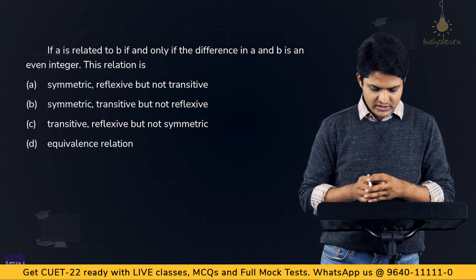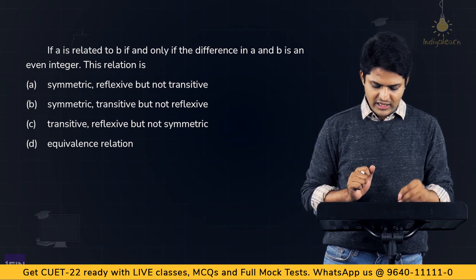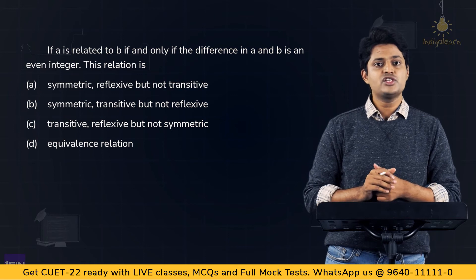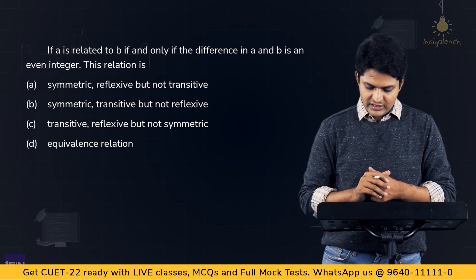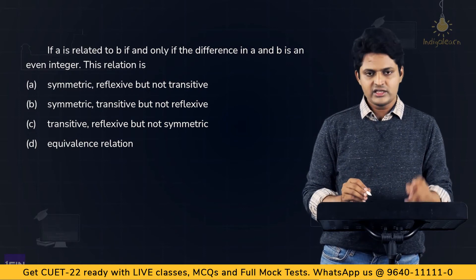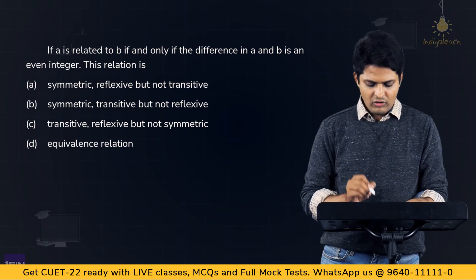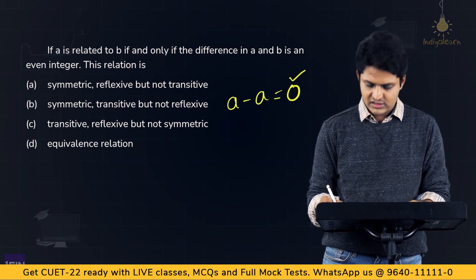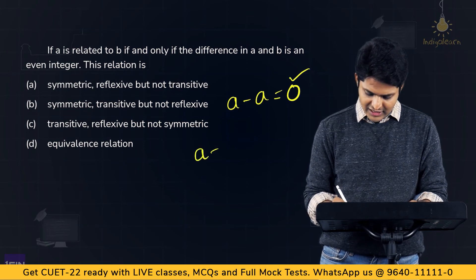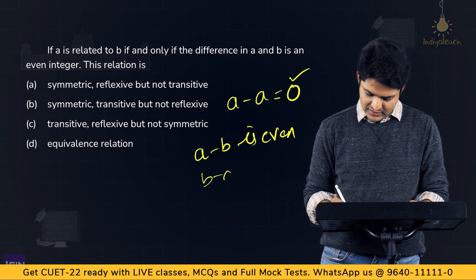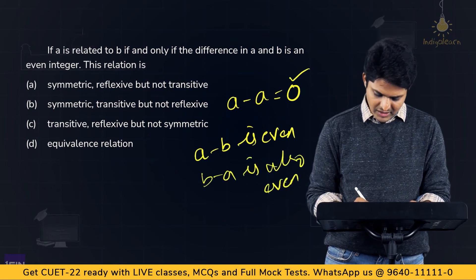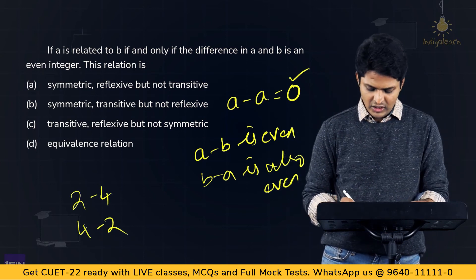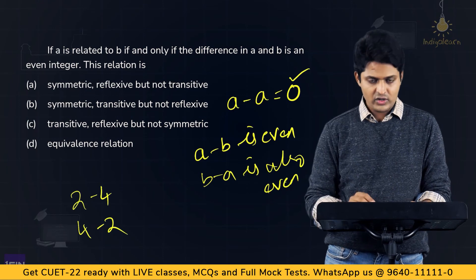Sample Question 2: A is related to B if and only if the difference A minus B is an even integer. Determine the type of relation. There are three types: reflexive, symmetric, and transitive. Reflexive: A minus A = 0, which is even. Symmetric: if A minus B is even, then B minus A is also even.